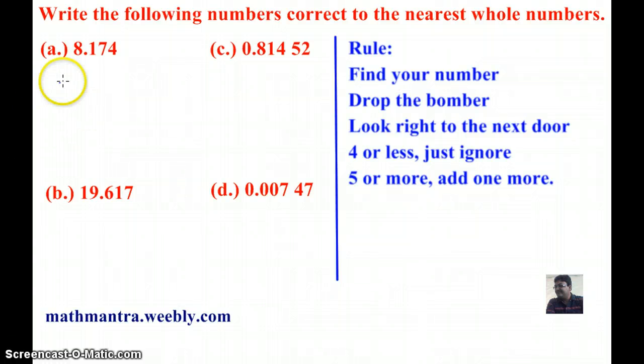So let's start with our first example. Our first example is 8.174. The rule says that I must find my number and then drop the bumper, which means I need to find my number and then specify which number it is.